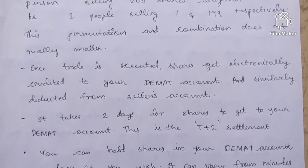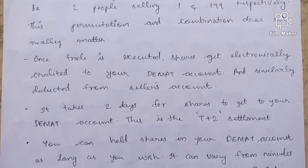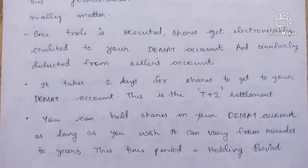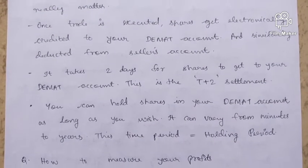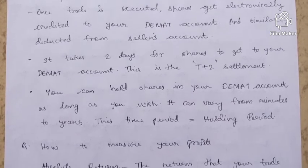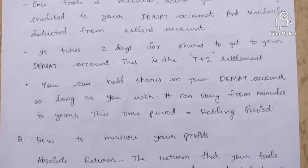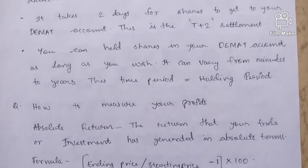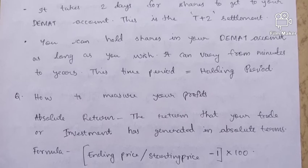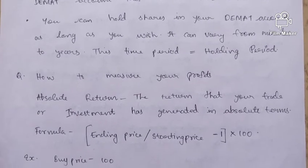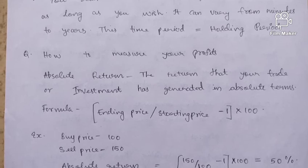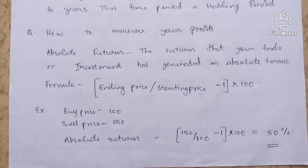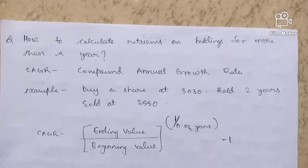Once a trade is executed, shares are electronically credited to your DMAT account and deducted from the seller's account. It takes two days for shares to reach your DMAT account — this is known as T+2 settlement. You can hold shares in your DMAT account for any duration, from minutes to years, known as the holding period. To measure profits, absolute return is calculated as: (ending price / starting price − 1) × 100.